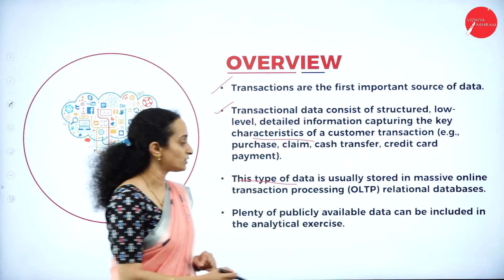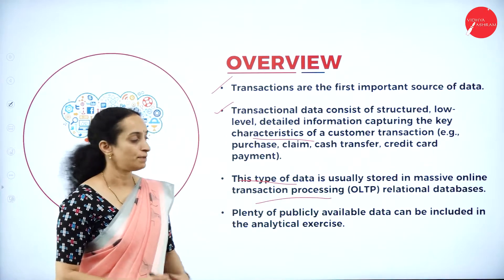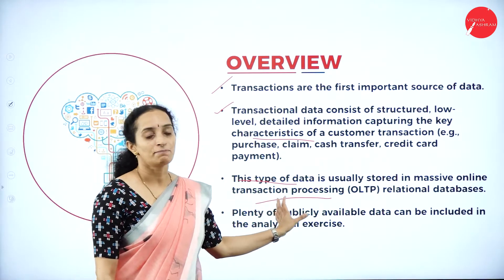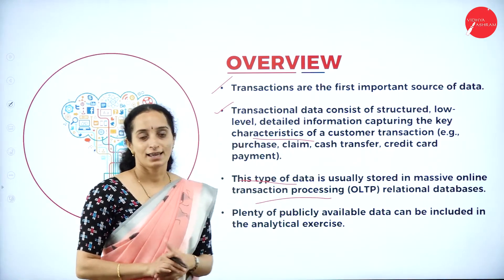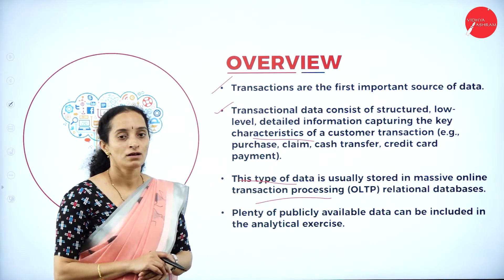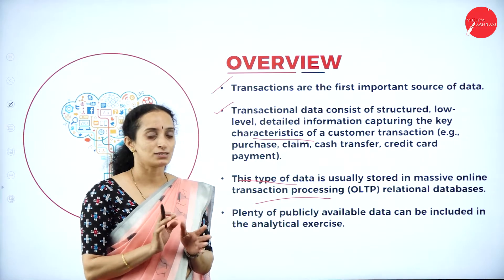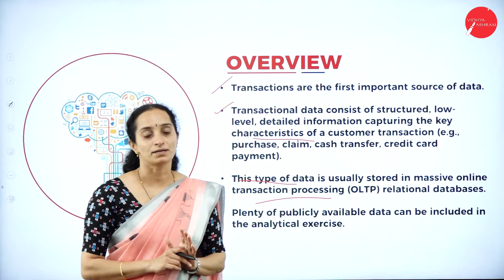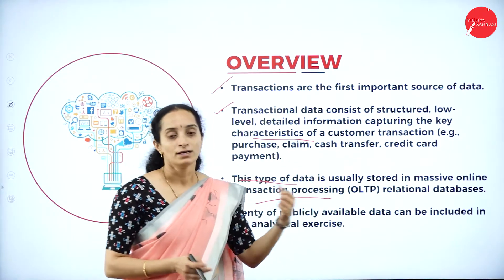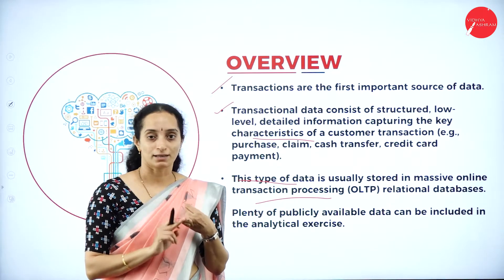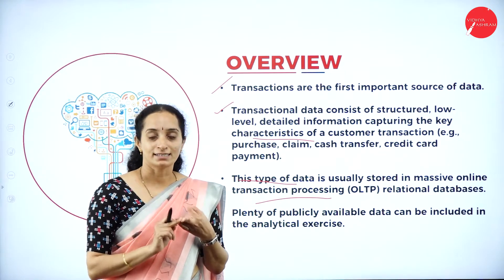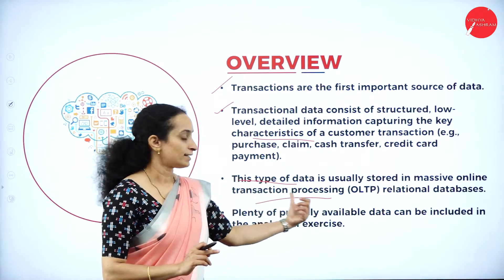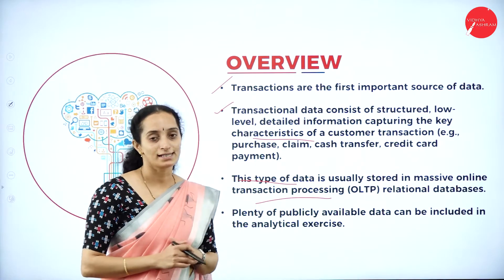This type of data is usually stored in the OLTP — Online Transaction Processing relational databases. These are the formats which store all this information. For example, if you shop on Amazon, sometimes if it is a cash transaction there is no need to store many details. But if it is a credit card or debit card transaction, it has to store the details of the purchase, the credit card or debit card details like card number, validity, card holder name, and CVV — everything stored in the online transaction processing database.